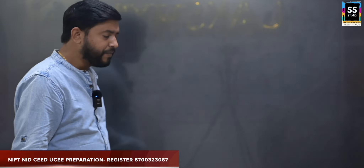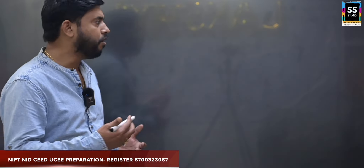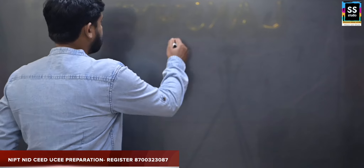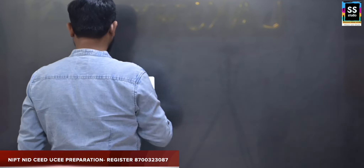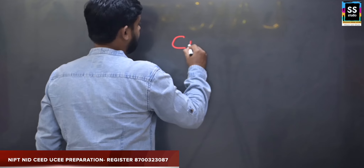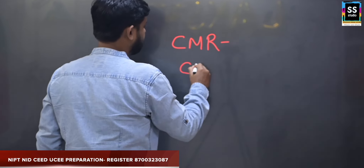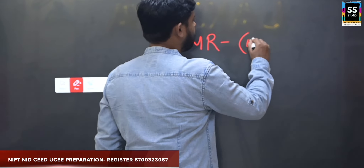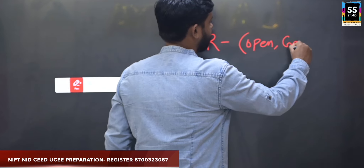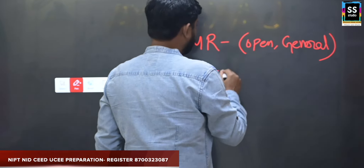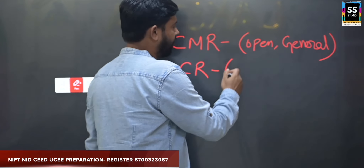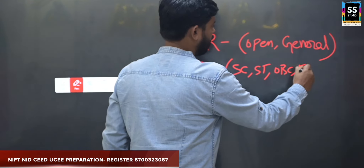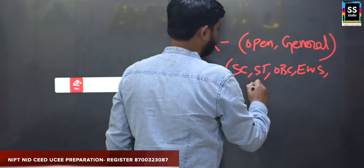Moving forward, let's talk about what is common merit rank and what is category rank — that's what you have to understand. Common merit rank is for open or general category. Category rank is for SC, ST, OBC, EWS, and PWD.